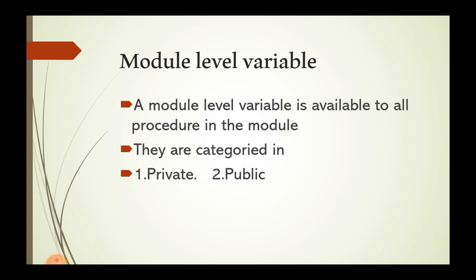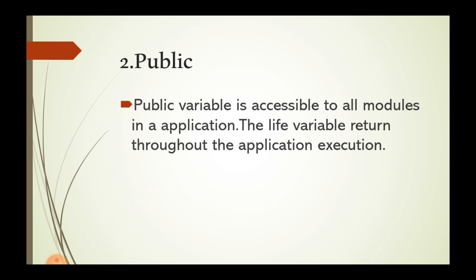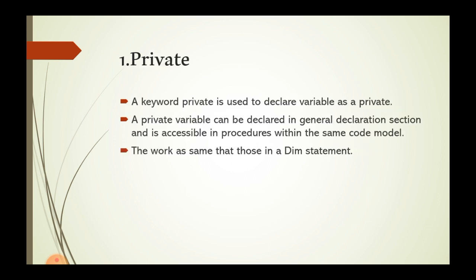Module-level variables are available to all procedures in a module. They are categorized as Private or Public. The Private keyword declares a variable accessible only within the same code module, declared in the general declaration section — similar to Dim. The Public keyword makes a variable accessible to all modules in the application throughout its entire execution.